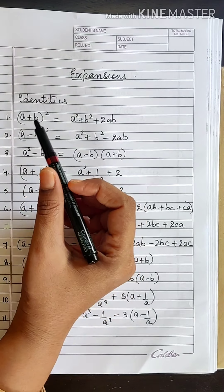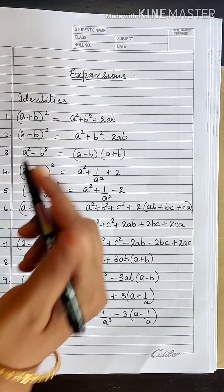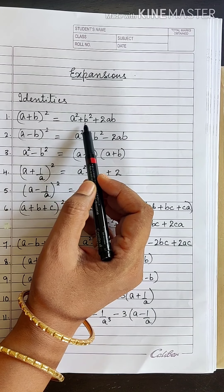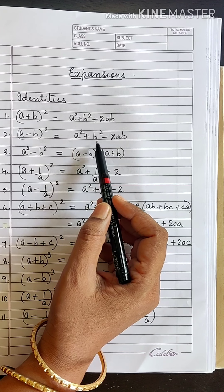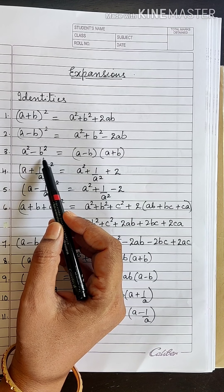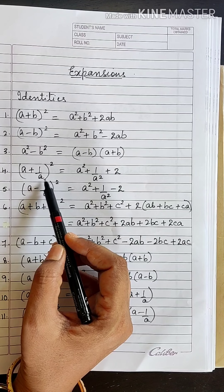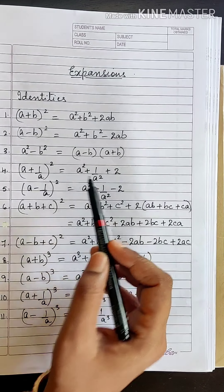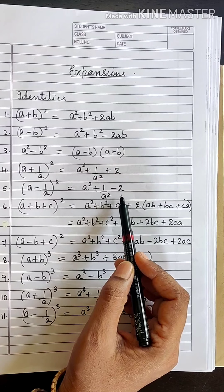Identities. We will recall the identities which you learnt in the 8th standard. First one: (A + B)² = A² + B² + 2AB. Next, (A - B)² = A² + B² - 2AB. Then A² - B² = (A - B)(A + B). Also, (A + 1/A)² = A² + 1/A² + 2, and (A - 1/A)² = A² + 1/A² - 2. Are you able to recall?